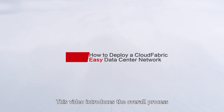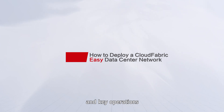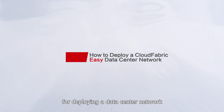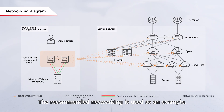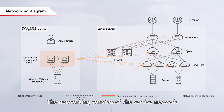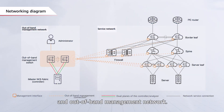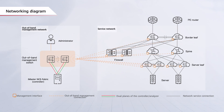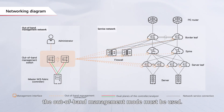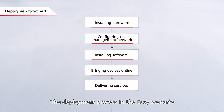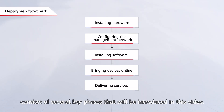Hello everyone. This video introduces the overall process and key operations for deploying a data center network in the CloudFabric easy scenario. The recommended networking is used as an example. The networking consists of the service network and out-of-band management network. In the easy scenario, the out-of-band management mode must be used. The deployment process consists of several key phases that will be introduced in this video.